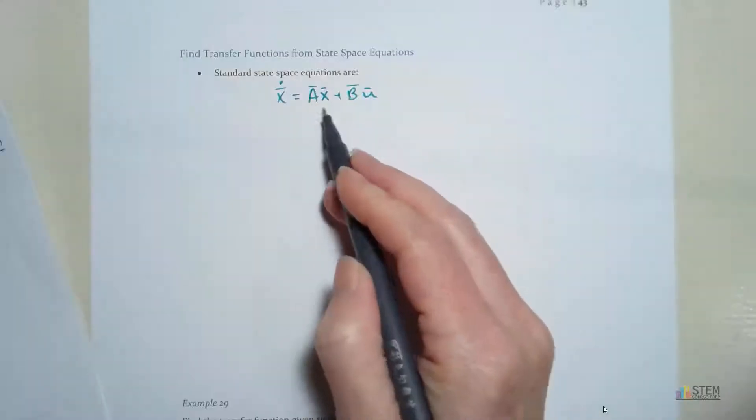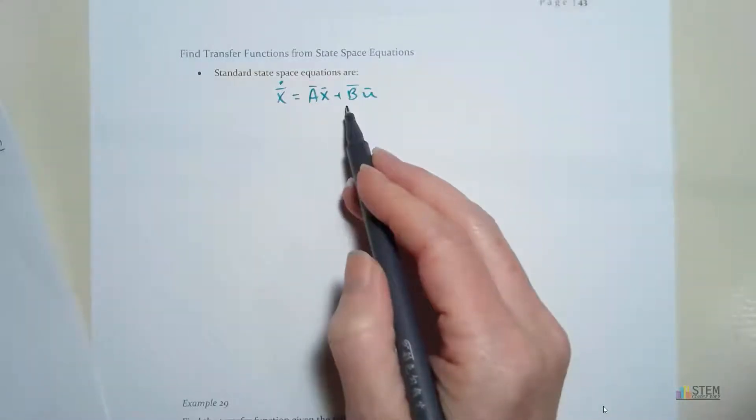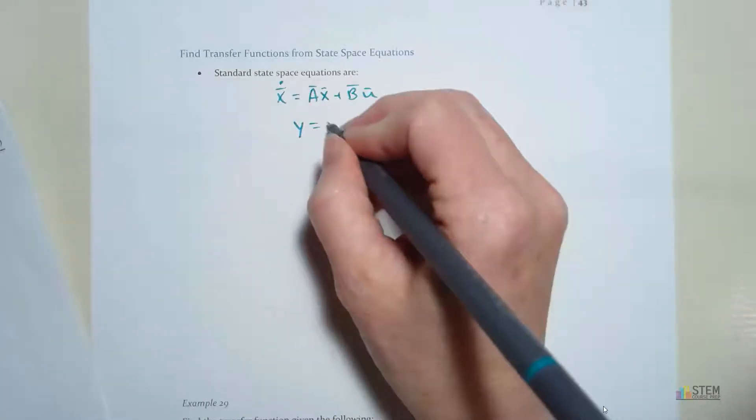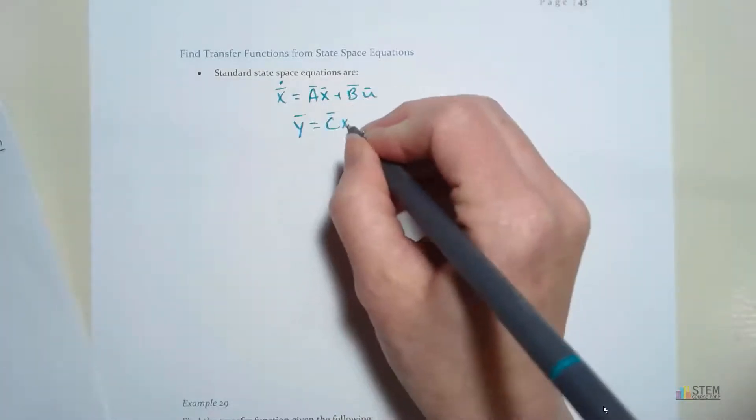Alright, and all of these are matrices or vectors. Now our output equation is going to be y equals c times x.